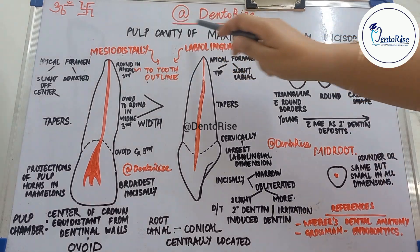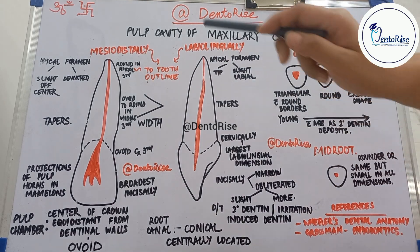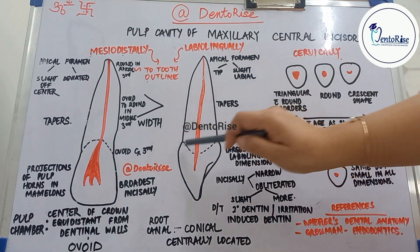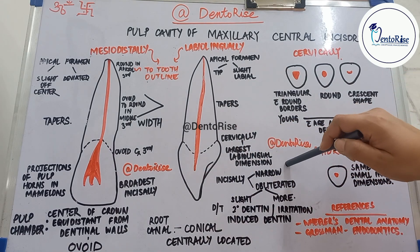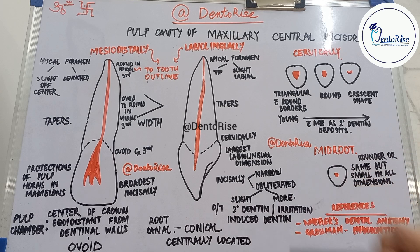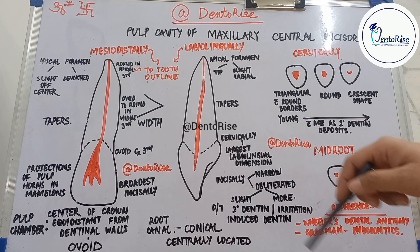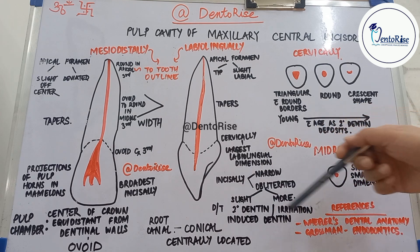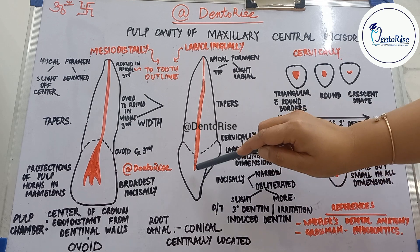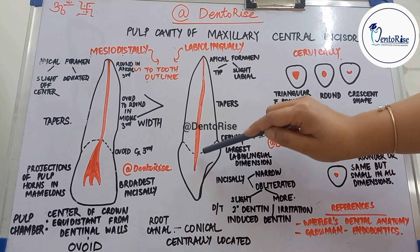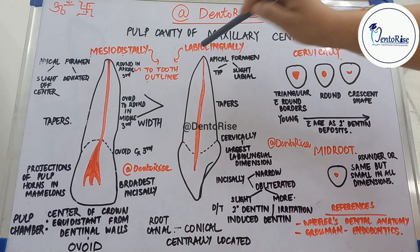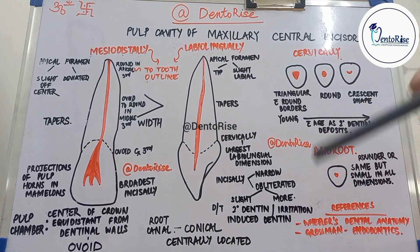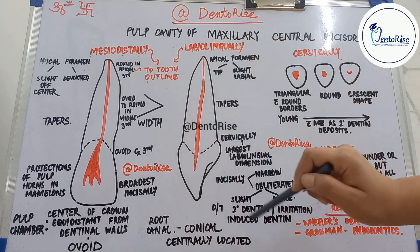Discussing the pulp cavity labiolingually: unlike mesiodistally, the pulp chamber labiolingually is narrow. Incisally, it can be either narrow or obliterated — this obliteration may be slight or more pronounced due to deposition of secondary dentine or irritation-induced dentine. The pulp reaches its greatest labiolingual dimension at the cervical area and then tapers down to the apex. The apical foramen is either at the tip of the root or slightly labial to the tip. Overall, the root canal is conical and centrally located.